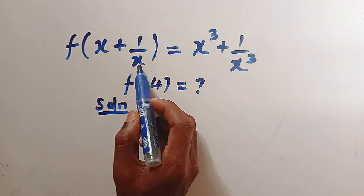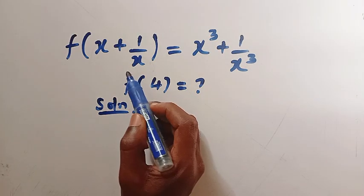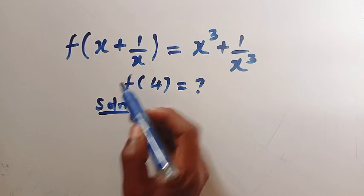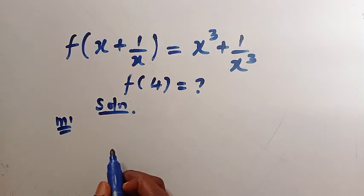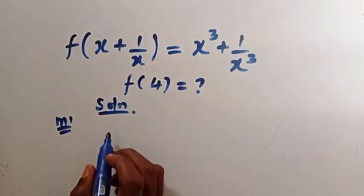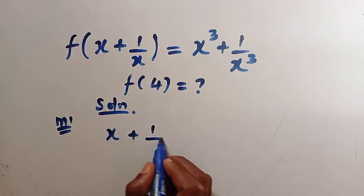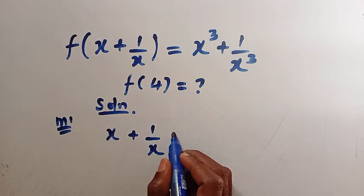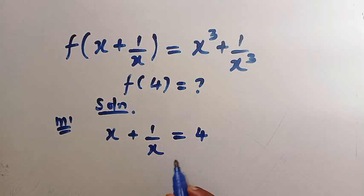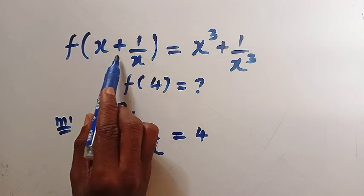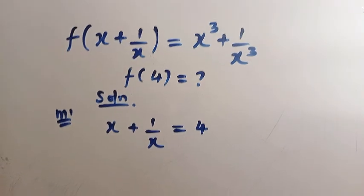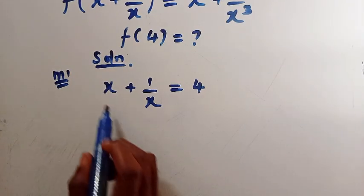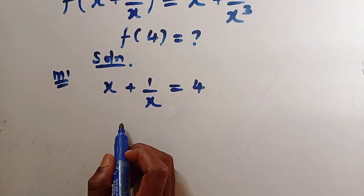Note that x here is not equal to 0, to avoid having an undefined function. For the first method, let's try and find x. Suppose I let x plus 1 divided by x — which is the domain — to be equal to 4, that we are looking for. Therefore this becomes f of 4 equals x cubed plus 1 over x cubed.